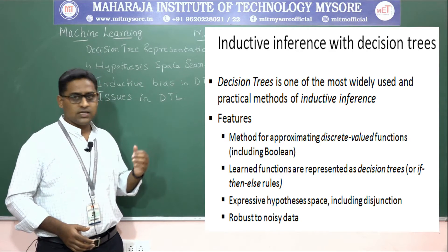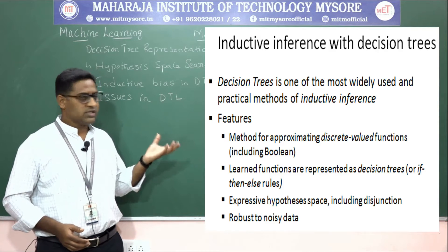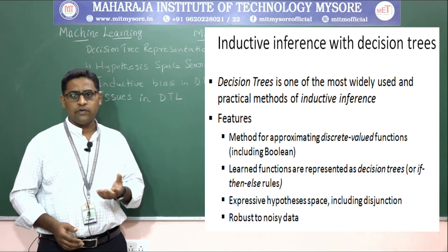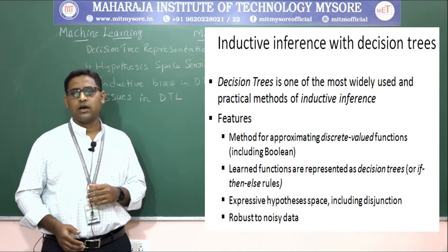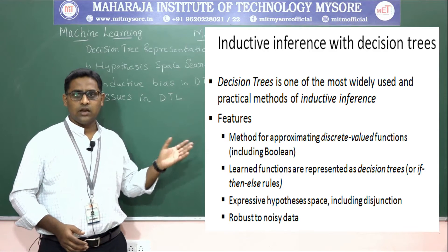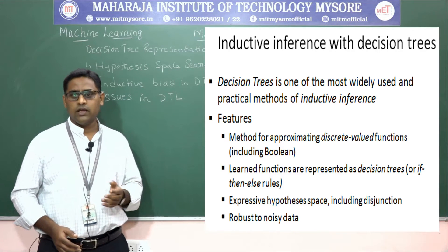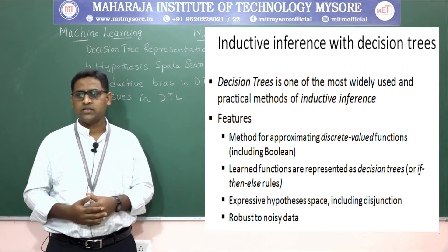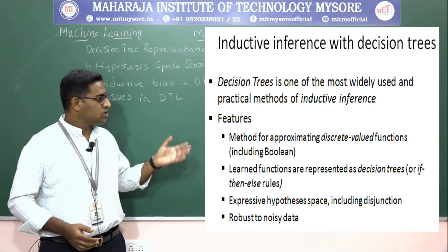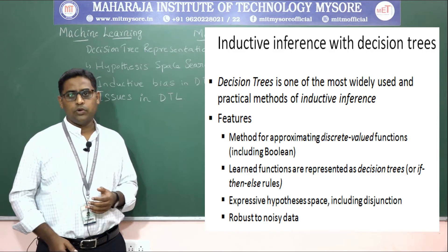Decision trees have several features: they are a method for approximating discrete-valued functions including boolean functions. Learned functions are represented as decision trees using if-then-else rules. They support an expressive hypothesis space including disjunction and conjunction, and they are robust to noisy data.